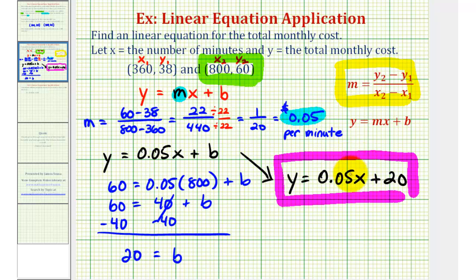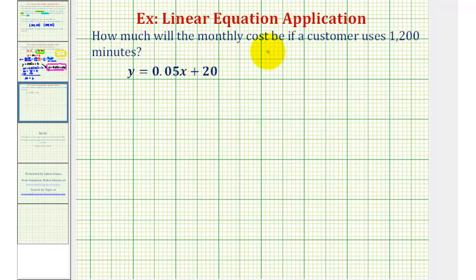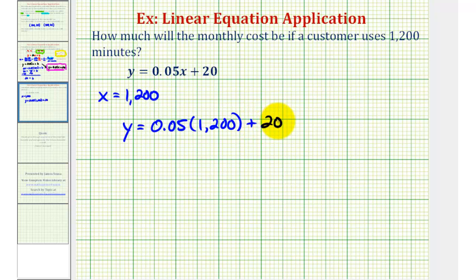Now once we have our equation, we can answer the second question, which asks us to find the total monthly cost if a customer uses 1,200 minutes. Since x represents the number of minutes, x is equal to 1,200, which we'll substitute for x, and then find the value of y. So y would be equal to 0.05 times 1,200, plus 20. So we would have y equals 0.05 times 1,200, which is 60, plus the flat monthly fee of $20, so y is equal to 80, which means if a customer uses 1,200 minutes, the total monthly cost would be $80.